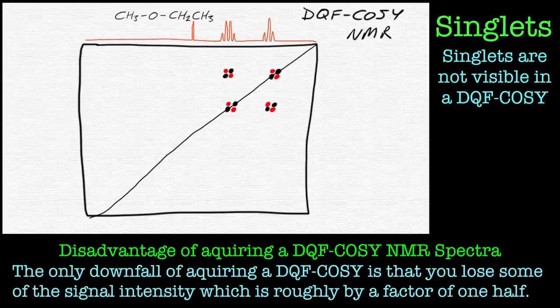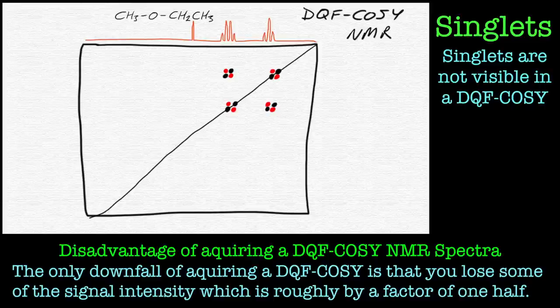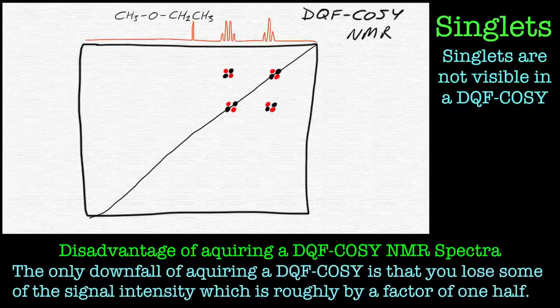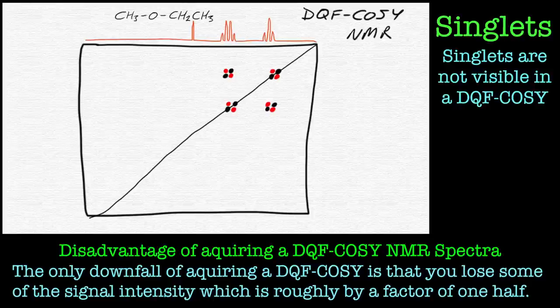The downfall of using DQF COSY is that you sacrifice the sensitivity by about a half. Now one of the main things I use DQF COSY for is actually to look at coupling constants. For complex 1D spectra where you would not normally be able to measure coupling constants, the coupling constants can actually be measured by the difference between the anti-phase peaks that you see here on the spectra, and I'll show you how to do that in a second.